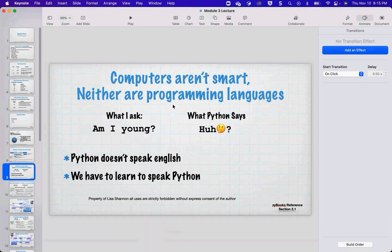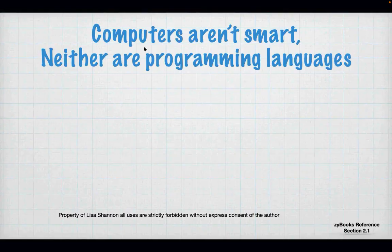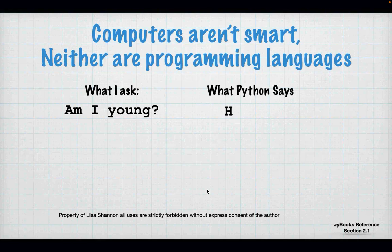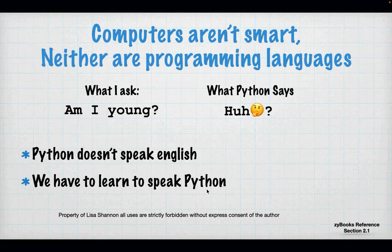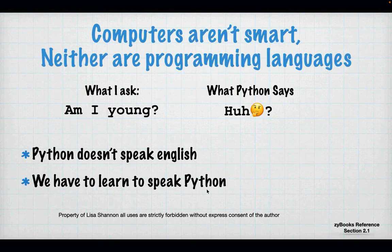Computers aren't smart — neither are computer programming languages. When I ask 'am I young?', Python says 'huh?' — that's because we haven't phrased the question in a discrete, quantifiable way that Python can understand. 'Am I young' is not quantifiable. If I'm 30, I might not be young to a 20-year-old, but I would be young to a 40-year-old. Python doesn't know any of that. We have to tell it and phrase the question appropriately.